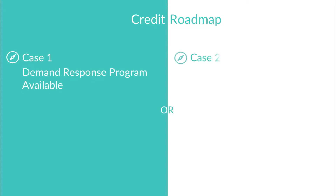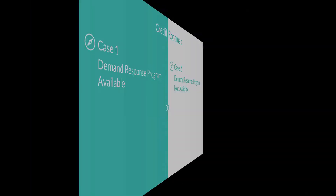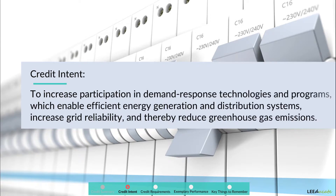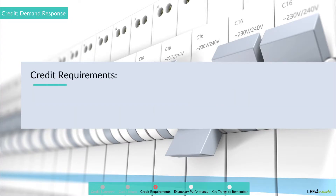Here is the credit roadmap. The credit contains two cases, and projects can choose either one. Case 1: demand response program available, and Case 2: demand response program not available. The credit intent is to increase participation in demand response technologies and programs which enable efficient energy generation and distribution systems, increase grid reliability, and thereby reduce greenhouse gas emissions.